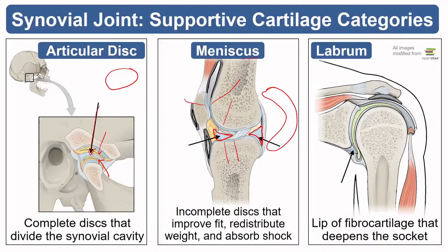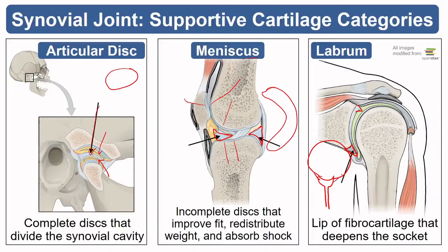Finally, a lip of fibrocartilage is called a labrum (plural: labra). This occurs when the socket of a joint is shallow, like the scapula — sort of like a golf tee with a giant golf ball on it. Adding a little lip of labra allows for a better fit and more contact between the two articulating surfaces. Labra are common to ball-and-socket joints like the shoulder and the hip.